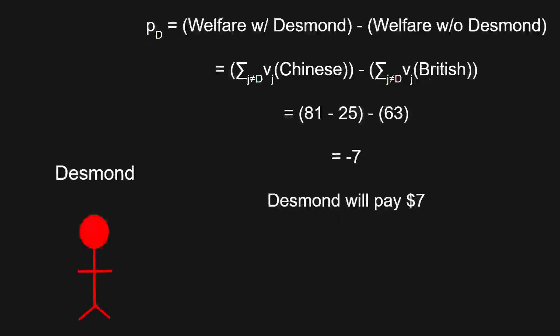We can now solve for Desmond's payment. For the social welfare when he's present, we take the total social welfare from choosing Chinese food — which was $81 — and subtract Desmond's private value of $25 for that outcome. This difference represents the welfare of Michael and Chuck. We then subtract the welfare of the others from choosing British food — what we would have chosen ignoring Desmond's preferences — which is $63. This gives us Desmond's payment of $7 to the mechanism.